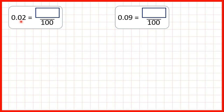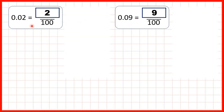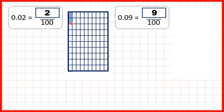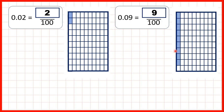Now we have 0.02. The first digit after the decimal point tells us how many tenths we have, and we don't have any tenths because we have a zero. The second digit after the decimal point tells us how many hundredths we have, so here we have 2 hundredths. For 0.09, the second digit after the decimal point tells us how many hundredths we have, so we have 9 hundredths. We can represent 0.02 as two parts out of a hundred on a fraction bar, and 0.09 as nine parts out of a hundred.